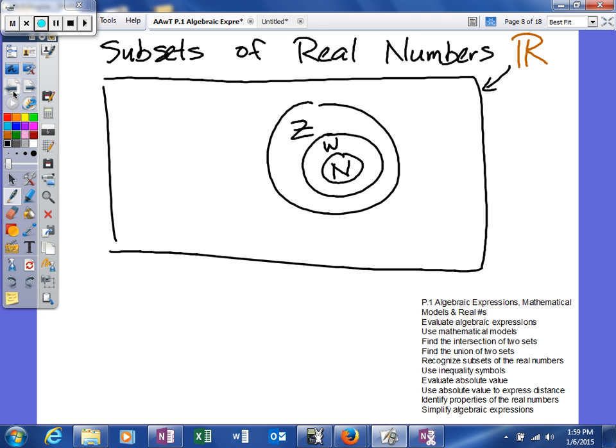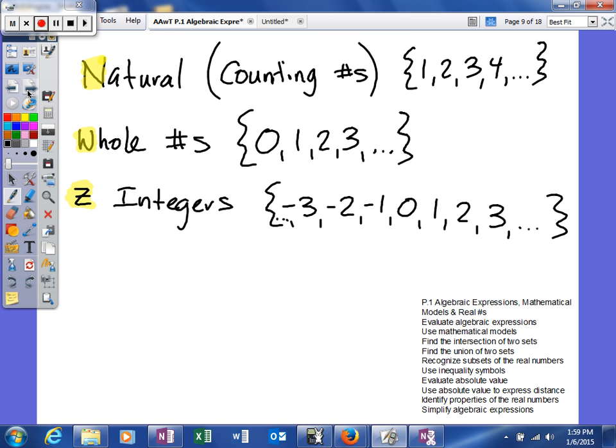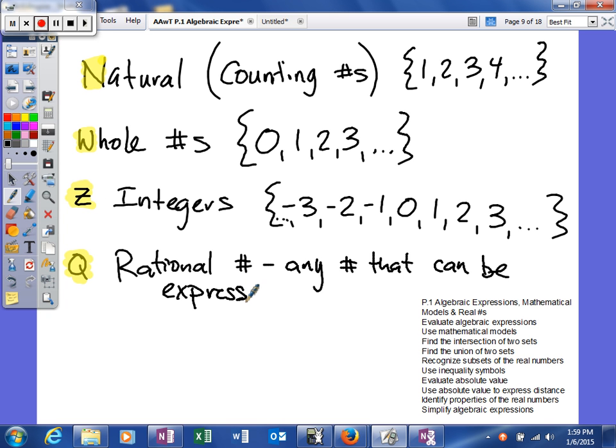And then our next one that we have is our rational numbers. So these are our rational numbers. What we use for our rational numbers, just like your integers, it's a little crazy. We'll actually use Q. Q is our abbreviation for rational numbers. A rational number is basically any number that can be expressed as A over B. As our sets get larger and larger, what we actually have is all of the natural numbers are whole numbers. All whole numbers are integers. All integers are rational numbers. But it doesn't go the other way. There are some rational numbers that are not integers.